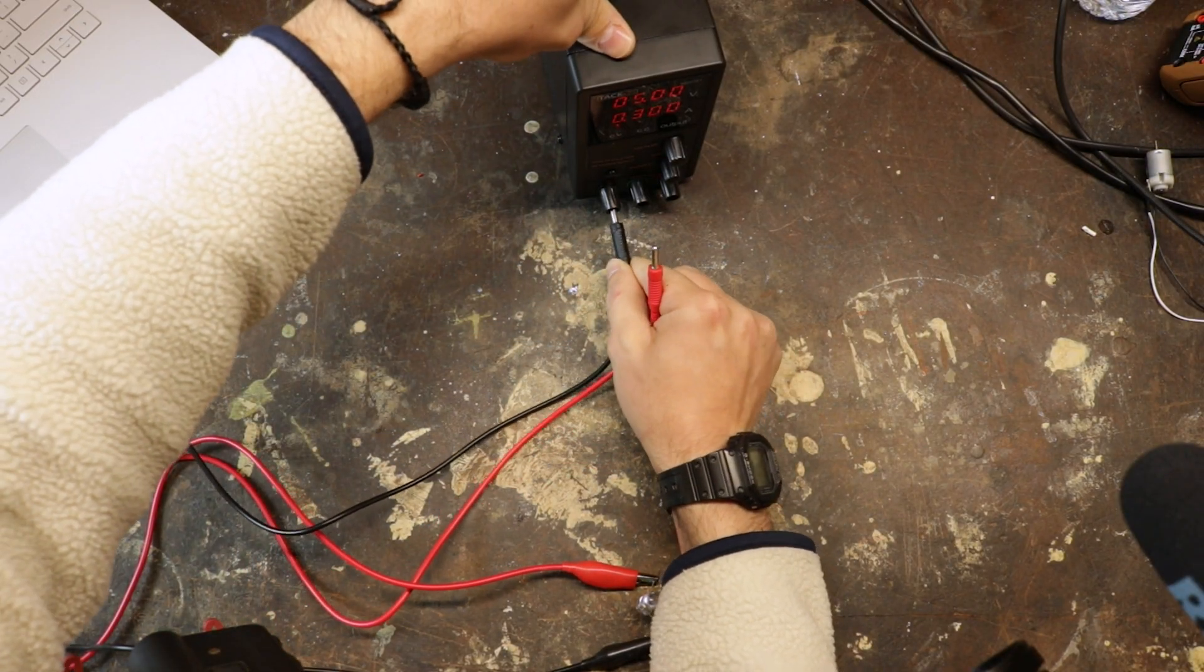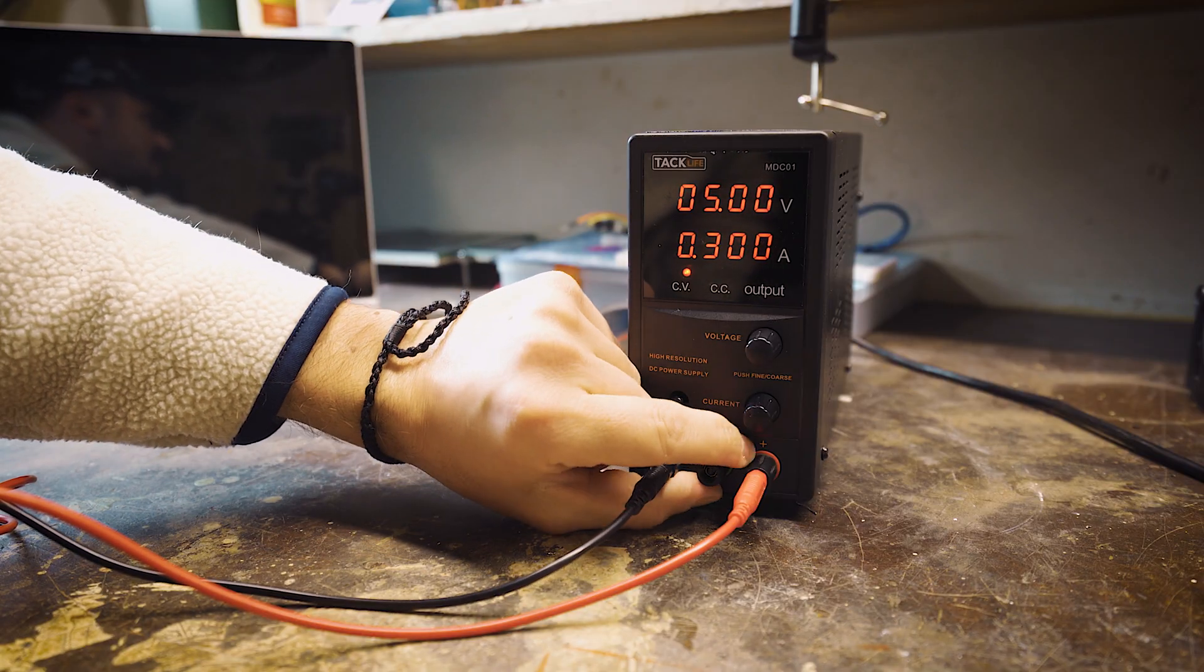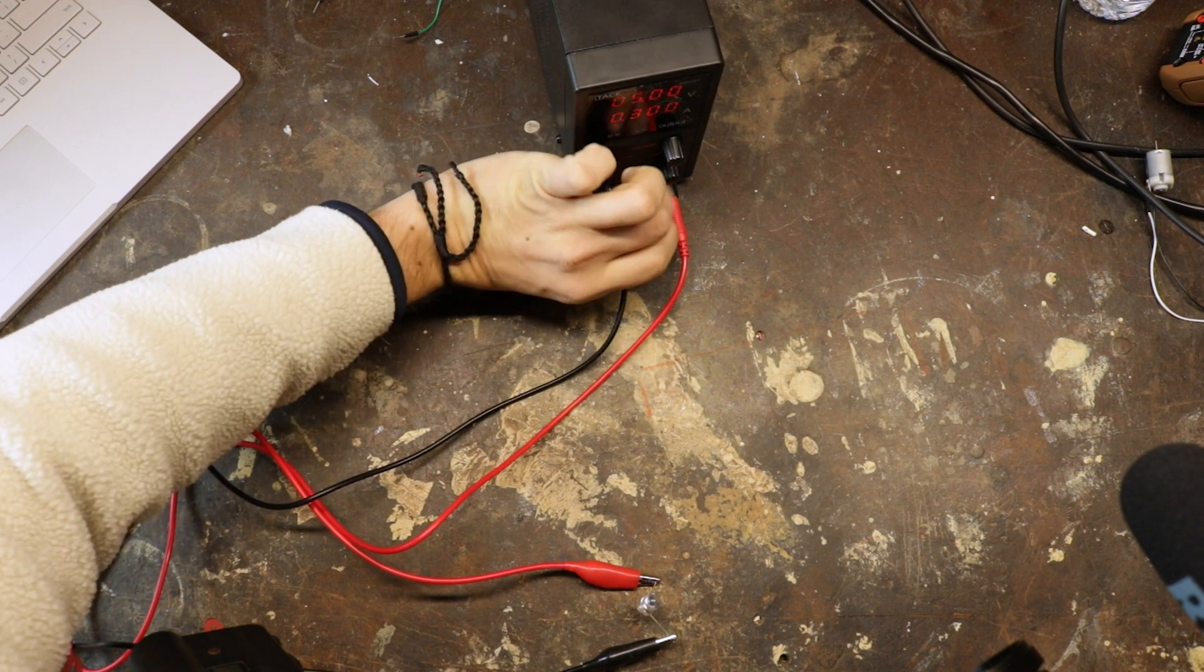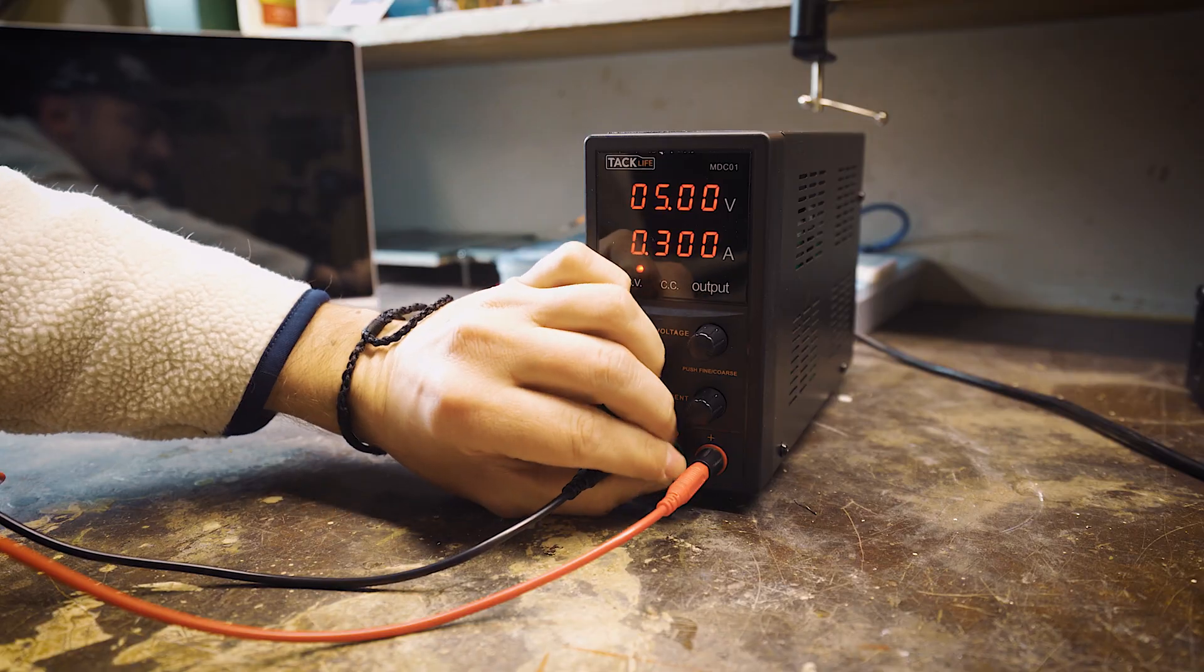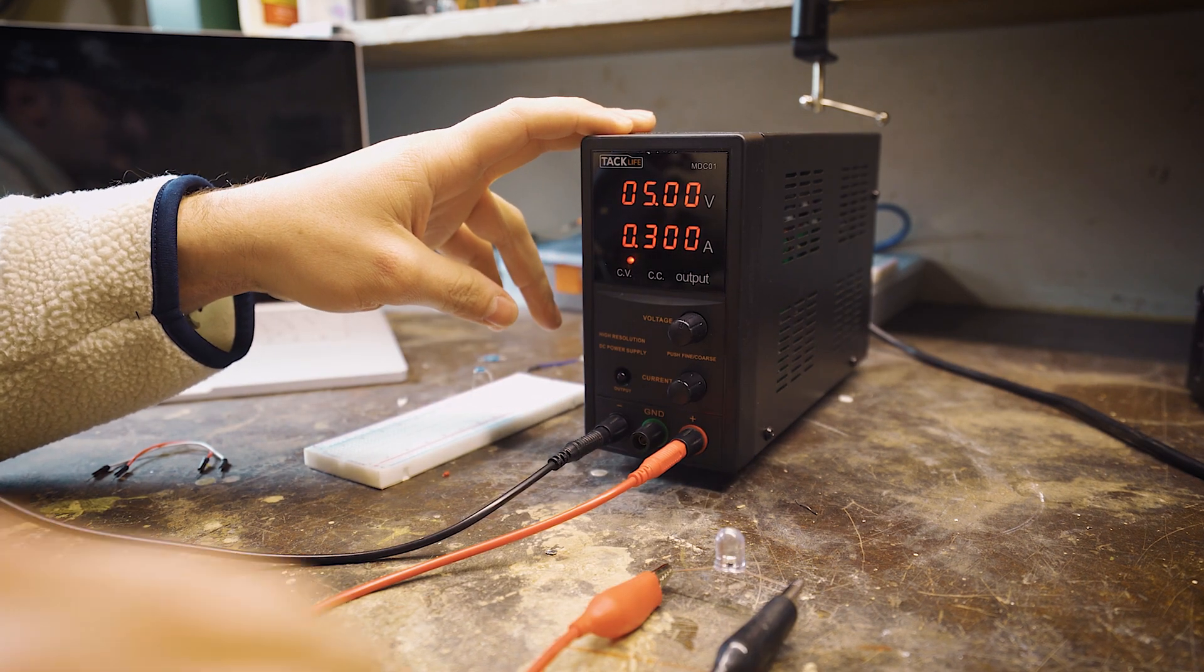So let's go ahead and connect it. You can either connect it through the banana plugs that come included in the box, or you can also connect it through there's little screw knobs where you can just wrap your wires around it and connect it that way. So you got options here. Let's go ahead and attach a load to this power supply so we can see how it actually works.